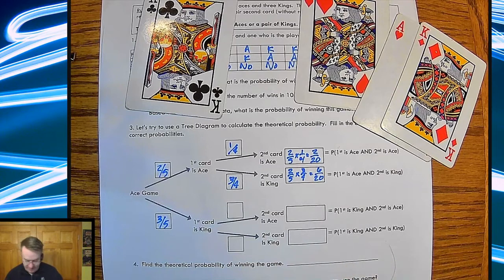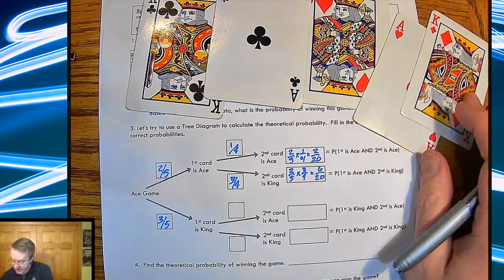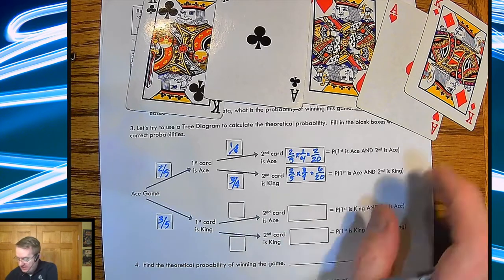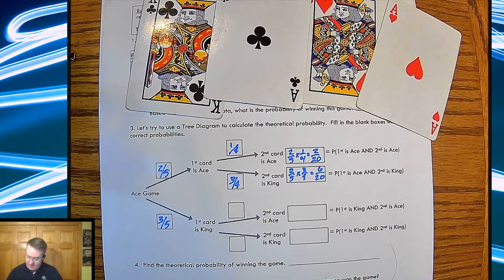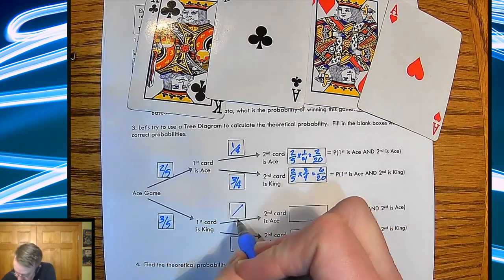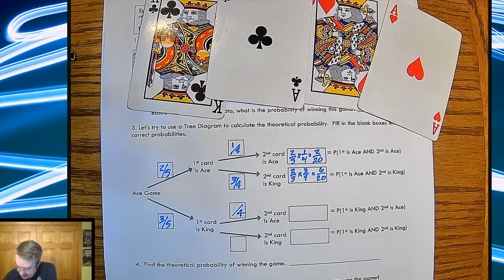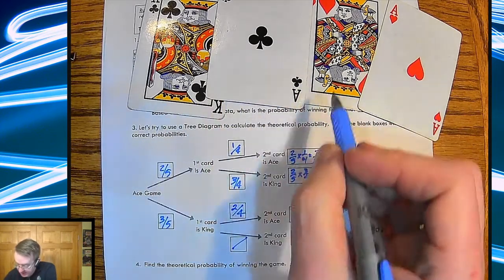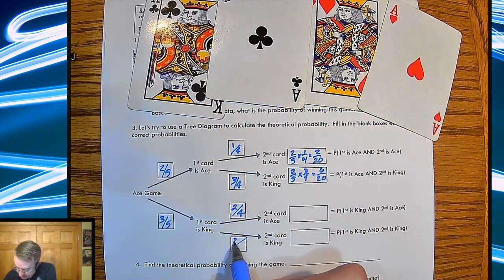Okay, so here are my cards. What's the probability if the first card is a king? So let's take that one off. So now I've got four still. Probability of getting an ace is going to be two out of four, the probability of getting a king is going to be two out of four.